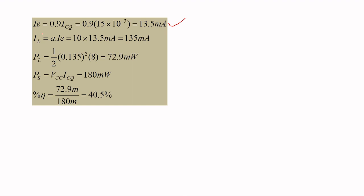The load current, referred through the transformer turns ratio, is IL = a × IE = 10 × 13.5 milliamps = 135 milliamps. Load power is P_load = (1/2) × IL² × RL = (1/2) × (0.135)² × 8 = 72.9 milliwatts.